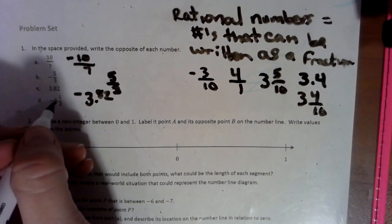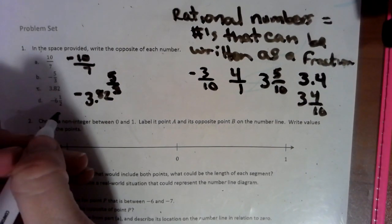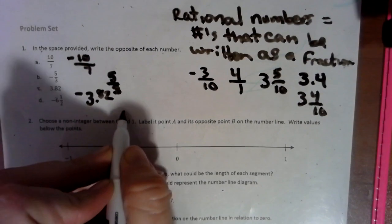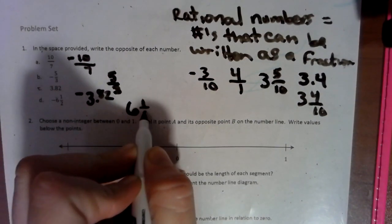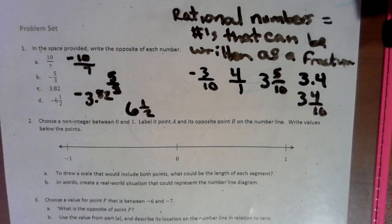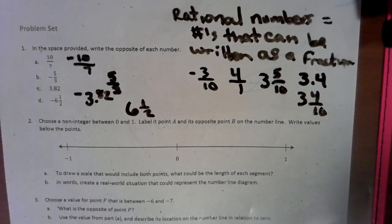And then we see negative six and one half, so that would be positive six and a half. So that is as easy as it gets right there.